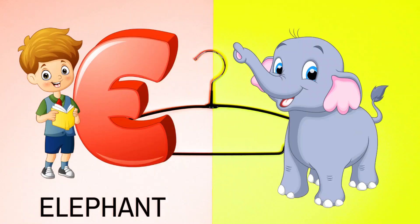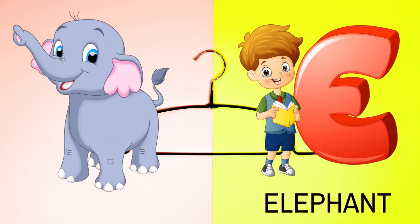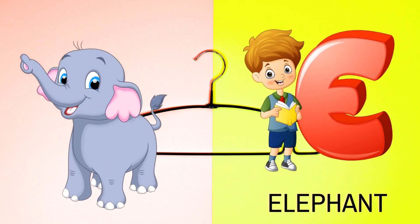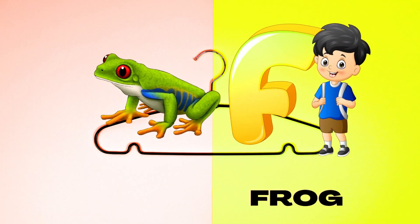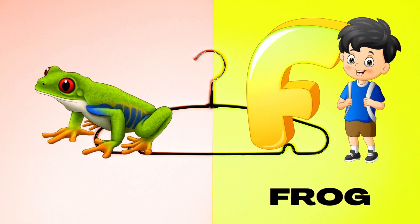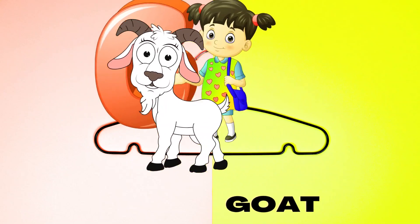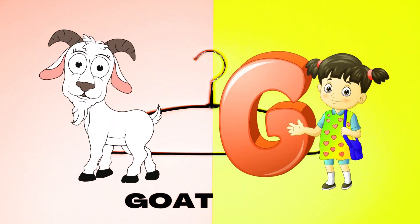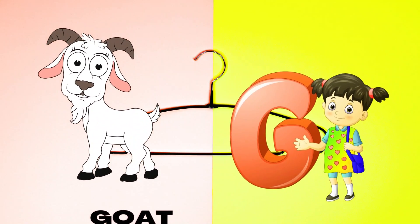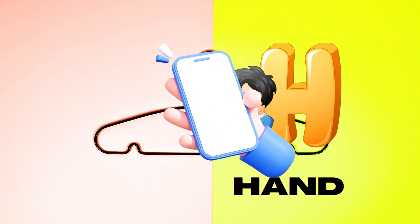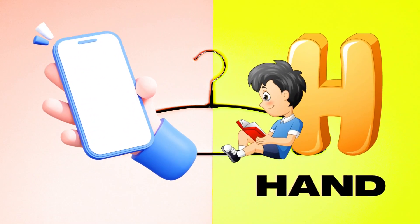E is for Elephant, E-E-Elephant. F is for Frog, F-F-Frog. G is for Goat, G-G-Goat. H is for Hand, H-H-Hand.